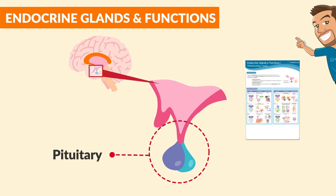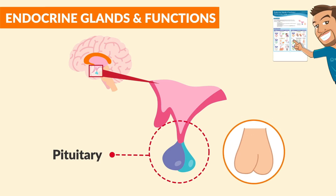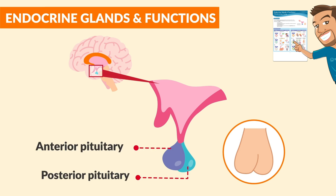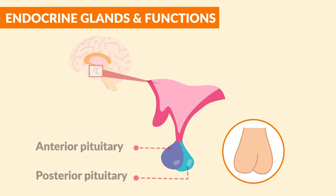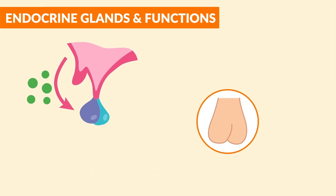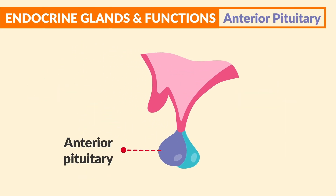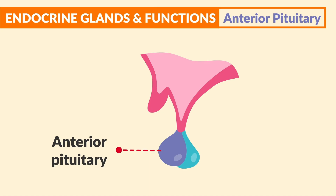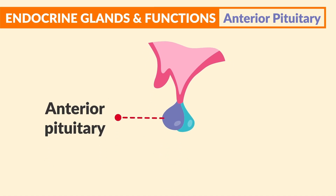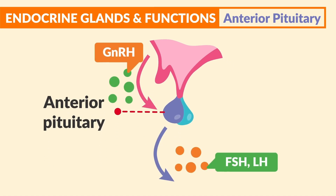Starting with the pituitary, which I call the testes of the brain, since they look like a set of testicles with two lobes — the anterior and posterior pituitary — and similarly, they release hormones that help the body do many functions. The anterior pituitary is the largest part of the pituitary gland and is responsible for synthesis and release of most pituitary hormones.